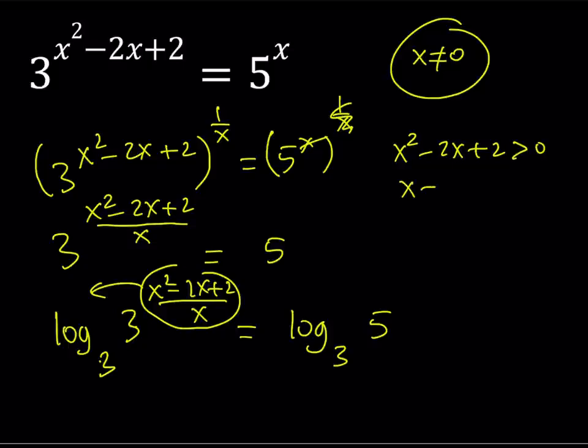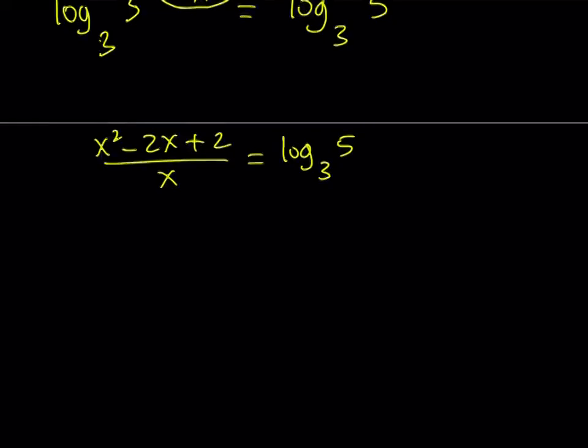Because this can be written as x minus 1 squared plus 1. And as you know, this is greater than or equal to 1. Therefore, it's always a positive quantity, which means it can never be 0.